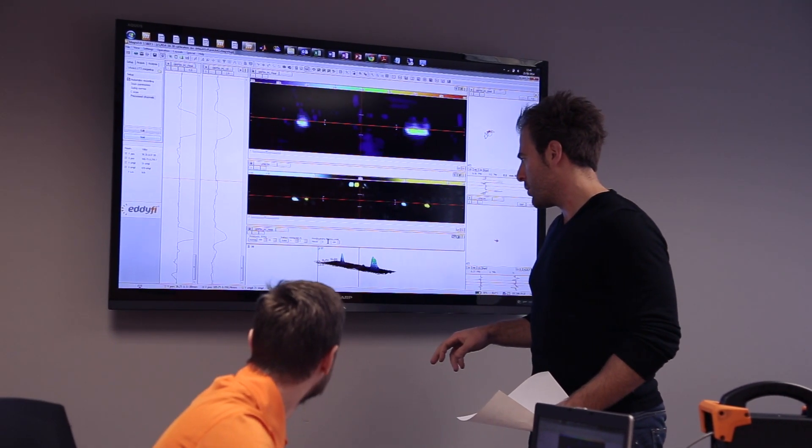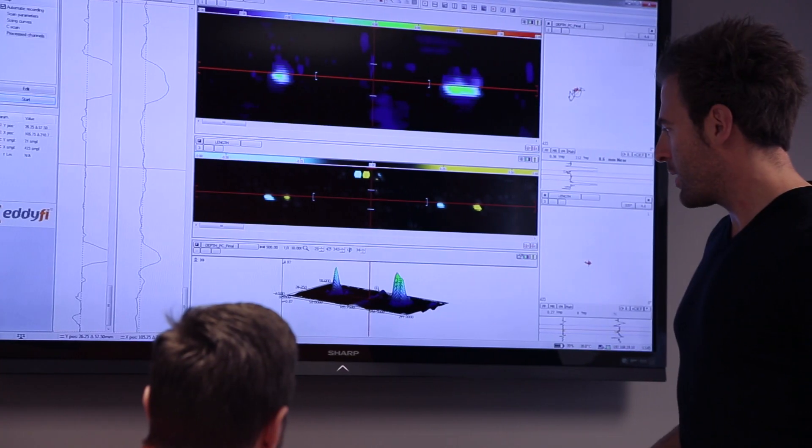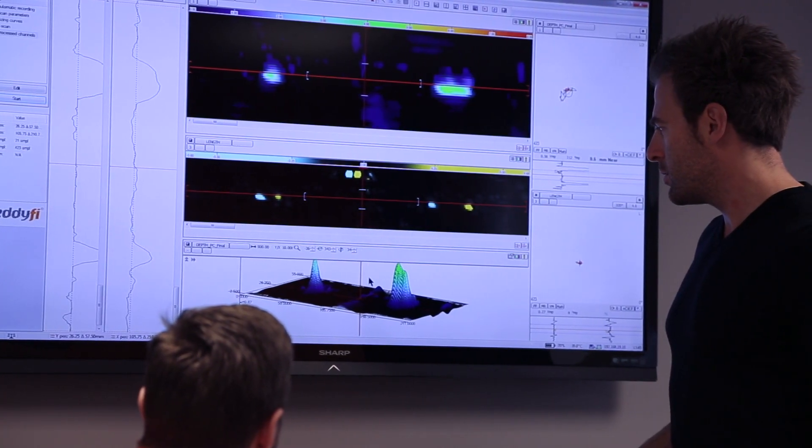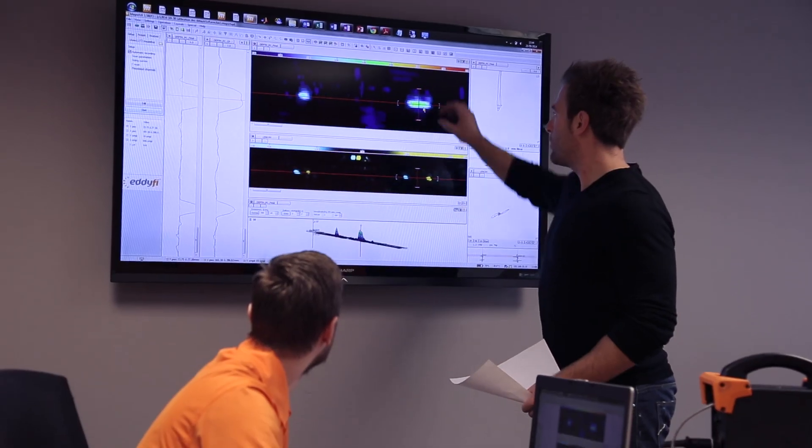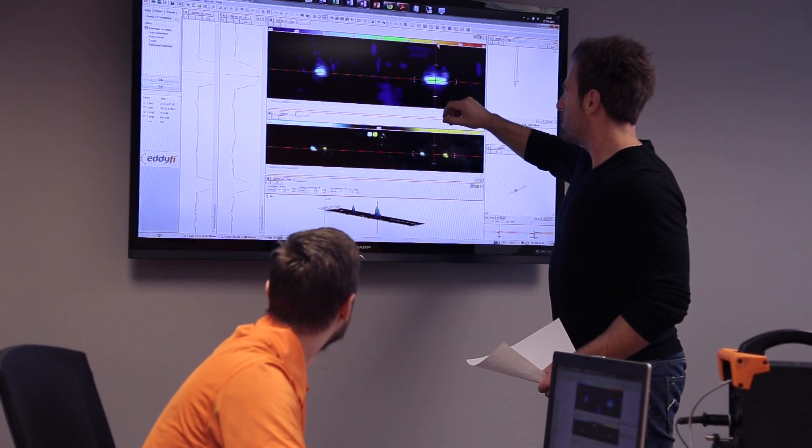The eddy current array also yields a wealth of information through 2D and 3D C-scan imaging. This intuitive imaging offers clear visual indications of defects. New, cutting-edge software tools automatically measure crack length, crack depth up to 10mm, and paint thickness.